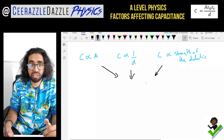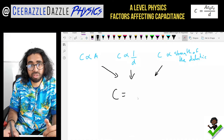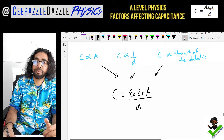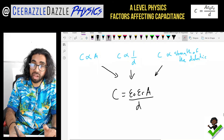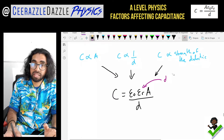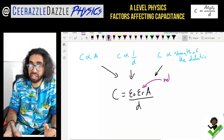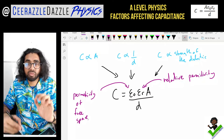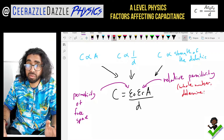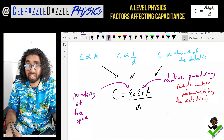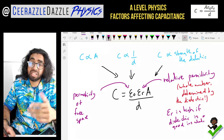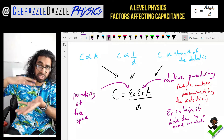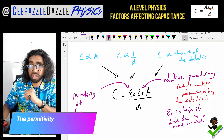Combining them all together gives us the formula: C = ε₀εᵣA / d, where A is the area and d is the distance. ε₀ is the permittivity of free space — because between the two plates you still have to account for the permittivity of free space — and εᵣ is the relative permittivity, which is determined by the dielectric. If the dielectric is a very good insulator, εᵣ will be high. ε₀ is a constant that will be given to you.